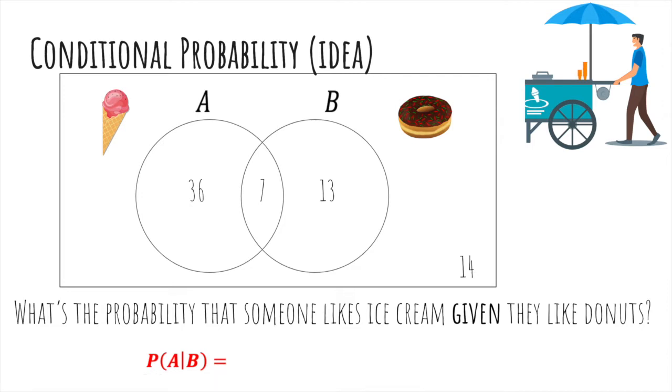Let's compute this. How many people actually like donuts? That's 20. And out of those 20 people, how many people also like ice cream? That's 7 over 20.